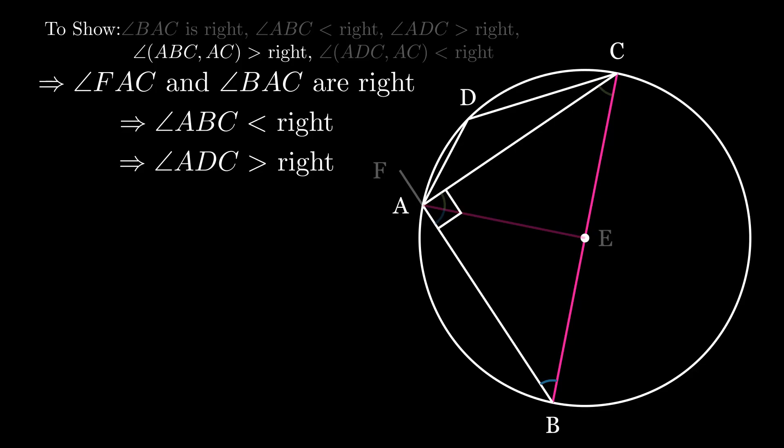To prove the fourth point, note that the angle contained by the circumference ABC and the straight line AC is greater than angle BAC, which is a right angle. So the angle of a greater segment is greater than a right angle.